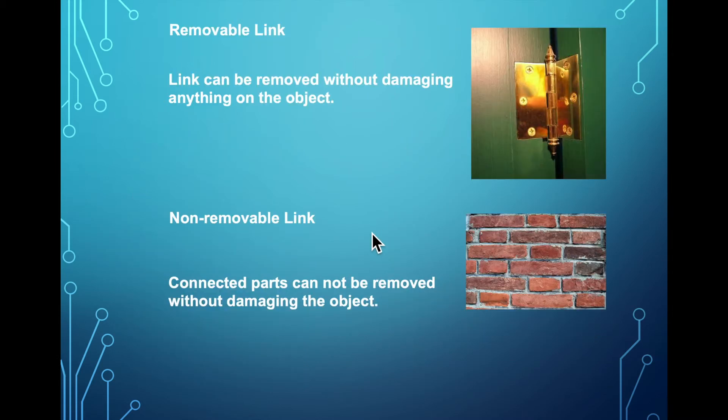Then we have removable versus non-removable. So are we able to remove that link? So let's say the door hinge over here. Can we remove the door hinge without damaging the door and the wall? Well, the answer is yes. We could still put a new hinge. Let's say we don't like the color of this one. We could put a new hinge and put back the door. Attach the door back to the wall and the door would be functional again. So this would be an example of a removable link.